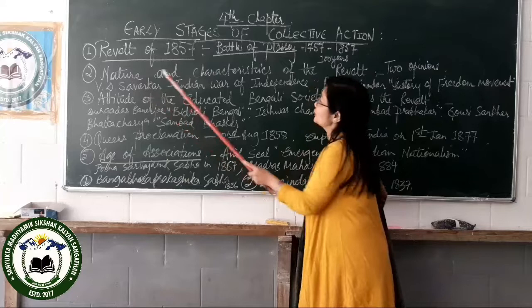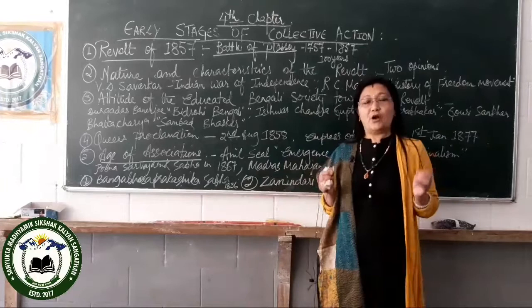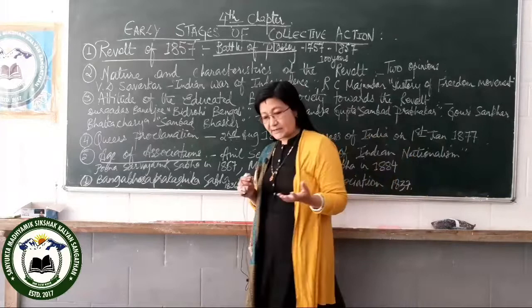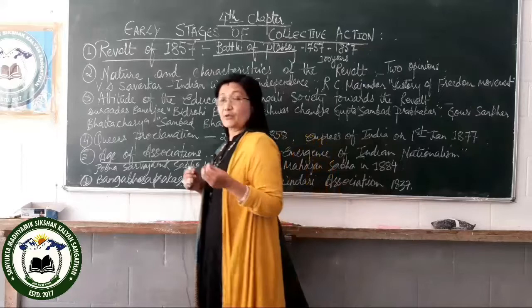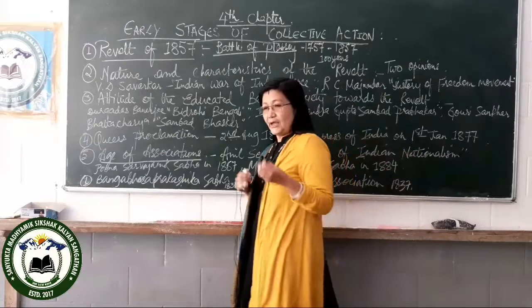The next topic is the nature and characteristics of the revolt. There are two different opinions. One group of historians says it was a sepoy mutiny, because it started with the sepoys and ended with the sepoys. Historians like John Lawrence and educated Bengalis like Bankim Chandra Chatterjee held this view.